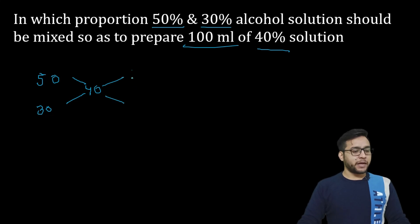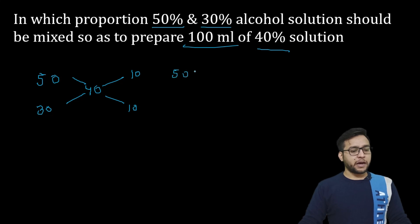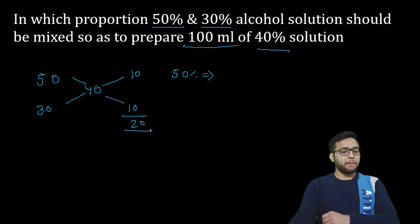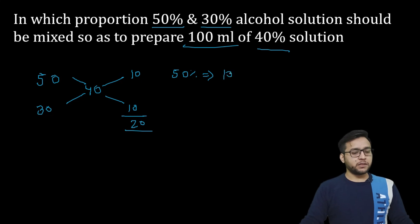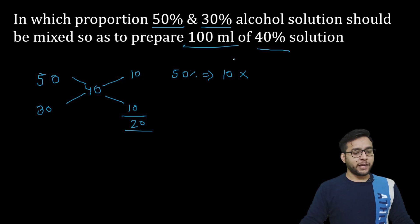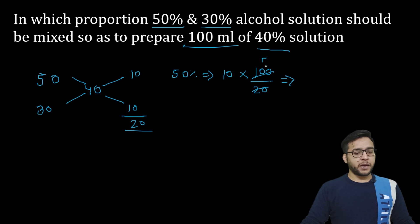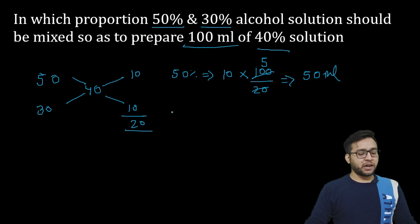इसके बाद हम इसमें से minus कर देंगे — यहाँ पर 10 आएगा और यहाँ पर 10 आएगा। 50% का कितना चाहिए — simple सा पहले इसको total करना था। यह 10 यहाँ पर value आएगा, फिर बनाना total 100 ml — यह 100 ml यहाँ पर आएगा और यह upon 20 हो जाएगा। Solve करने पर हमें 50 ml मिलता है — 50 ml हमें 50% का होगा।